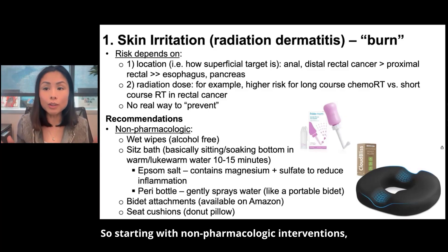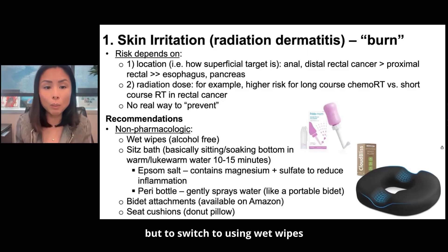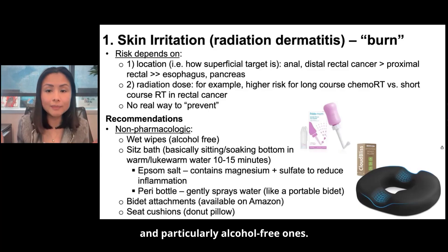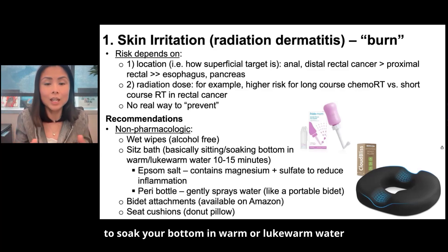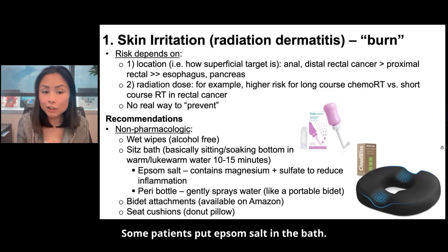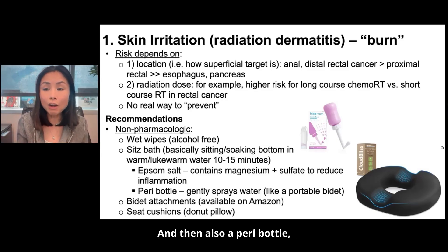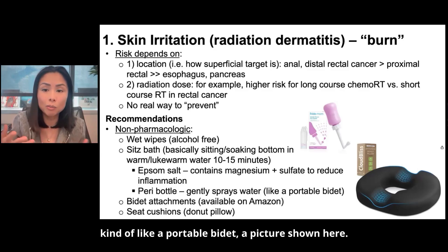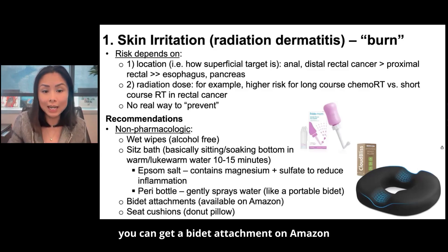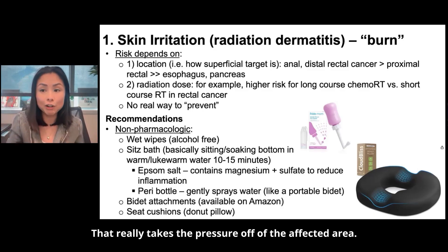So how do we manage it? Starting with non-pharmacologic interventions: first, I tell patients not to use toilet paper to vigorously wipe, but to switch to using wet wipes, particularly alcohol-free ones. Next, doing a sitz bath — that is sitting in a bath to soak your bottom in warm or lukewarm water for about 10 to 15 minutes. Some patients put Epsom salt in the bath. Also a peri bottle, which stands for perineal bottle, can be helpful — that gently sprays water to the affected area, like a portable bidet. You can also get a bidet attachment or purchase a donut pillow, which takes the pressure off of the affected area.